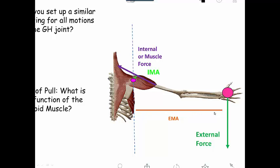It has a very long moment arm, and multiplied by that external force, it creates a large ADductor torque at the glenohumeral joint. That is being opposed by an ABductor torque, which is due to the muscle force — the internal force of the deltoid, acting from its attachment point at a diagonal, times the internal moment arm.